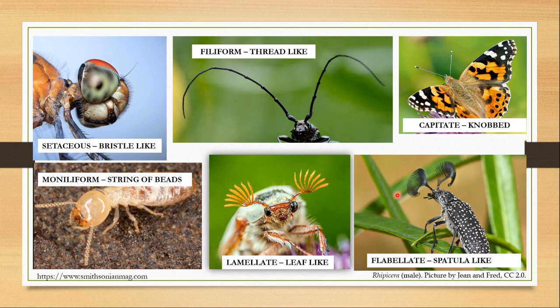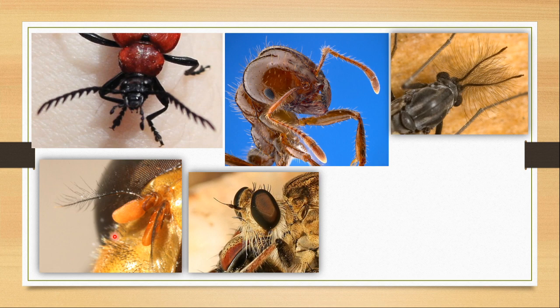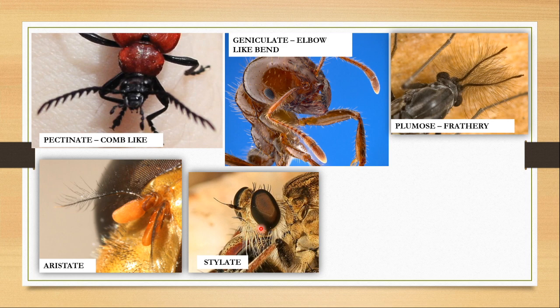So: setaceous antennae, filiform antennae, capitate antennae, moniliform antennae, lamellate antennae and flabellate antennae. Now some more: this one looks like a comb, so this is the pectinate type. Here the antennae makes a sharp bend after the pedicel — this is the geniculate type. Here in the mosquito's antennae you see a very bush-like or feathery structure — this is the plumose antennae. Here the only flagellomere has an arista or bristle, so this is the aristate antennae. And here the terminal segment bears a style, so this is the stylate type of antennae.